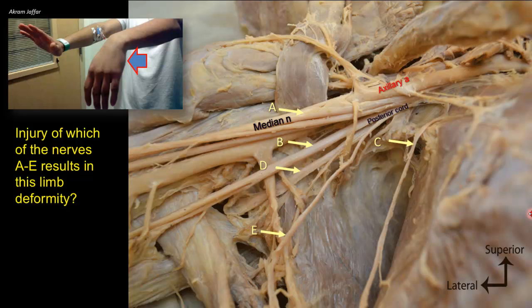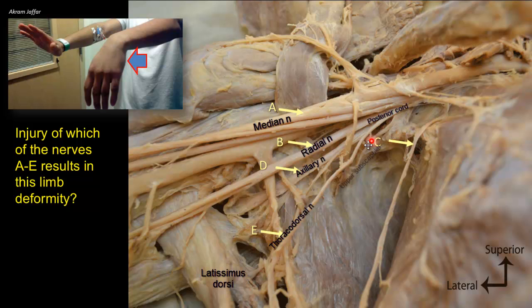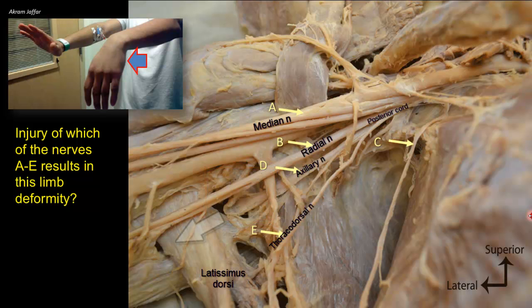The names of the cords of the brachial plexus are derived from their relation to the axillary artery. The posterior cord has five branches: two large terminal branches — the radial nerve and the axillary nerve — the thoracodorsal nerve going to latissimus dorsi, flanked by the upper and lower subscapular nerves. The axillary nerve immediately leaves the axilla through the quadrangular space, while the radial nerve passes toward the arm, crossing in front of the ribbon-like tendon of latissimus dorsi, which serves as a landmark for the radial nerve.